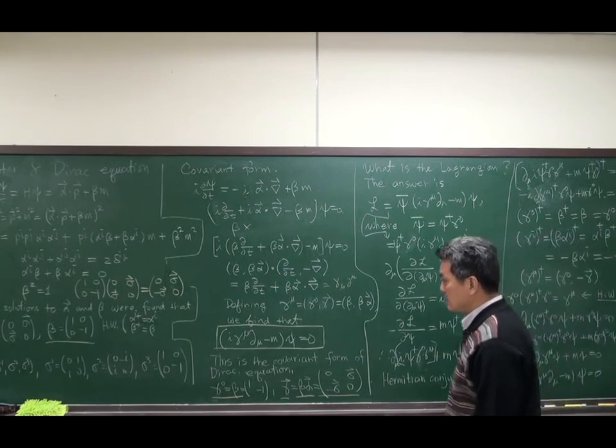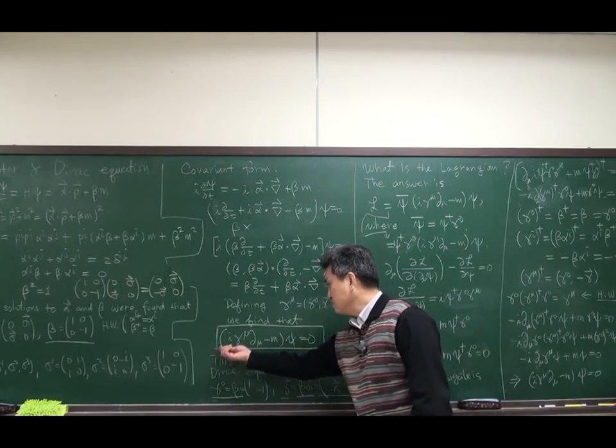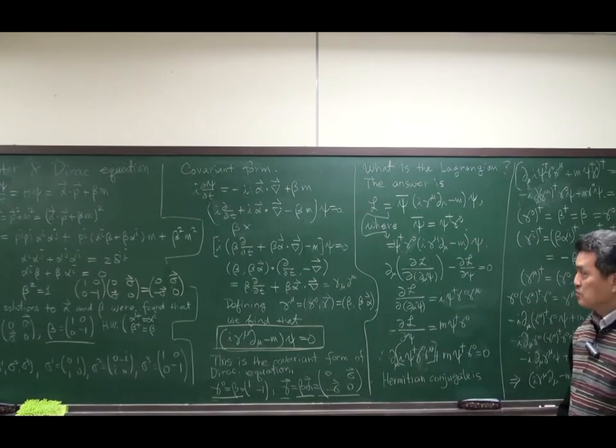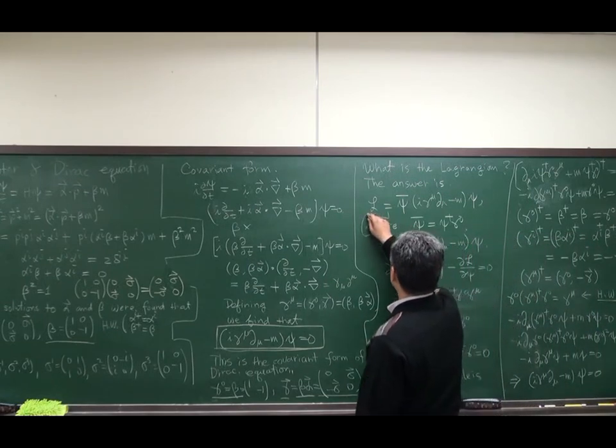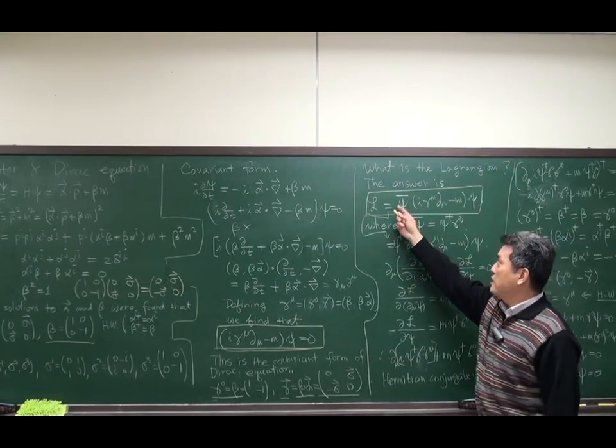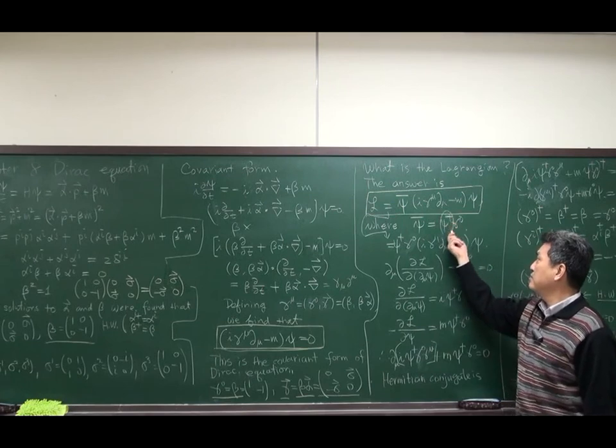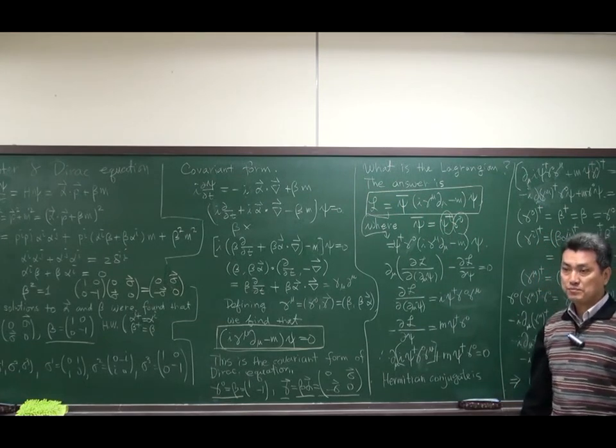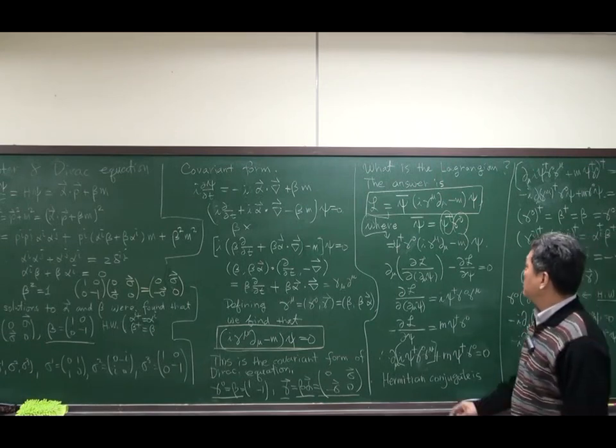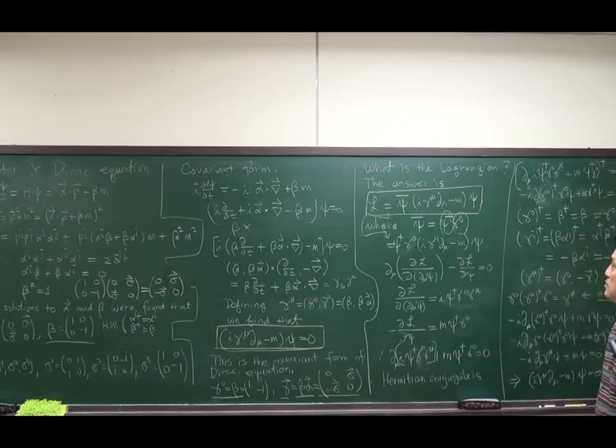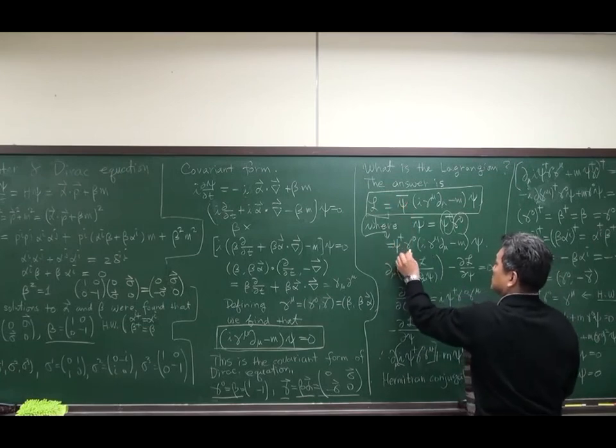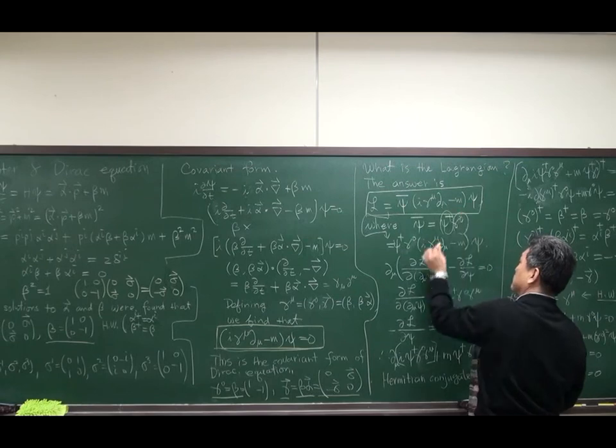Then, our next question is, what is the Lagrangian that produces this equation of motion? To make it short, just let me give you the answer. This is the Lagrangian. Where, this psi bar is defined to be psi dagger multiplied by gamma 0. So, this is psi dagger and gamma 0. And, I copy the remaining part.